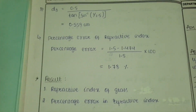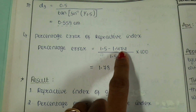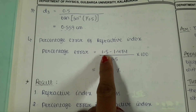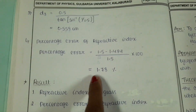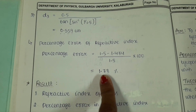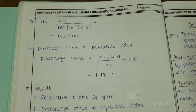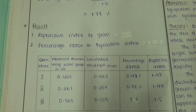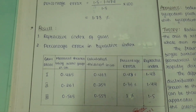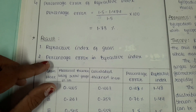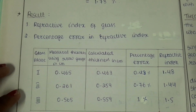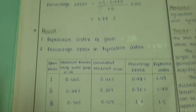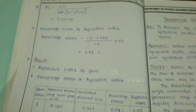At the end, calculate the percentage error using the average refractive index value and the actual value of 1.5. The error comes out to about 1.73 percent, meaning the experiment was done very well. Finally, write down the results: refractive index of glass and percentage error in refractive index. Hope this video is helpful — thank you for watching.